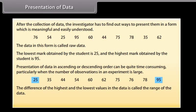The difference of the highest and the lowest values in the data is called the range of the data. So the range in this case is 95 minus 25 which is equal to 70.